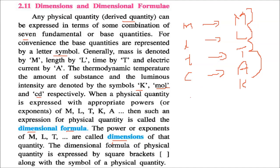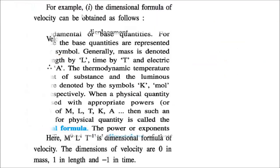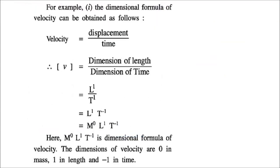The dimensional formula is written in square brackets along with the symbol of the physical quantity. For example, the dimensional formula of velocity: velocity is displacement by time. The displacement is of course length, so we take the dimension of length divided by the dimension of time.